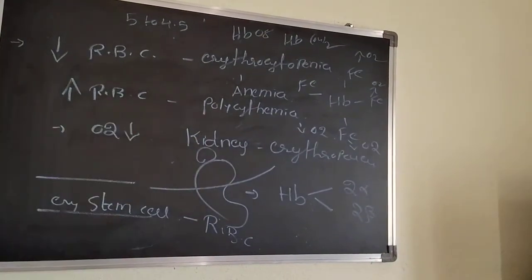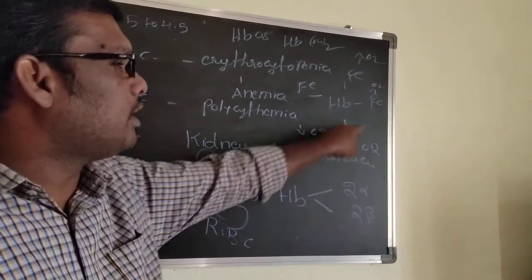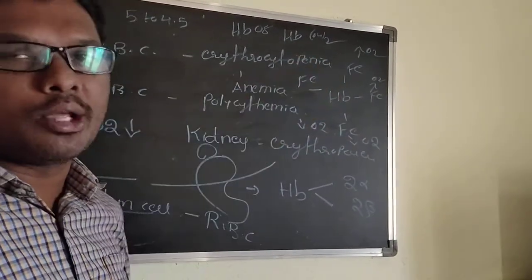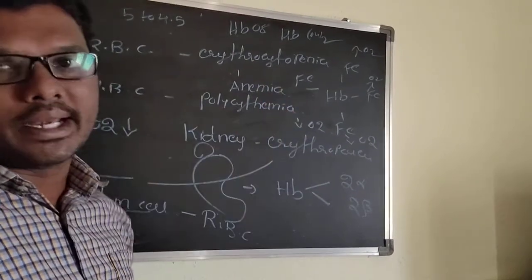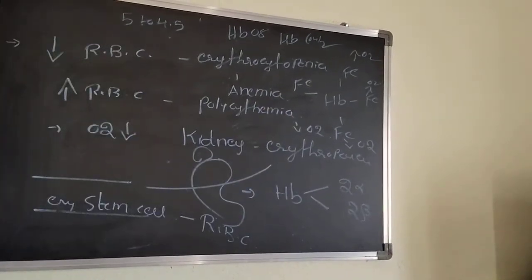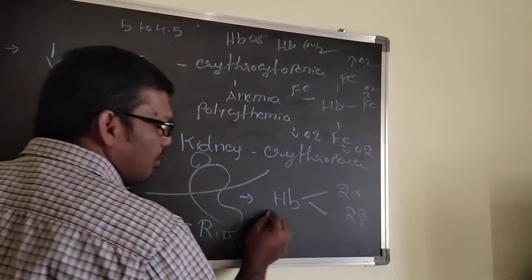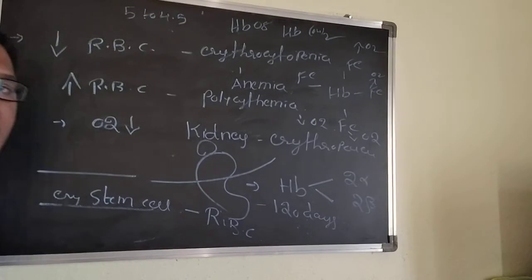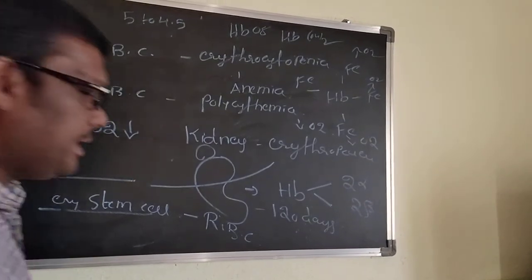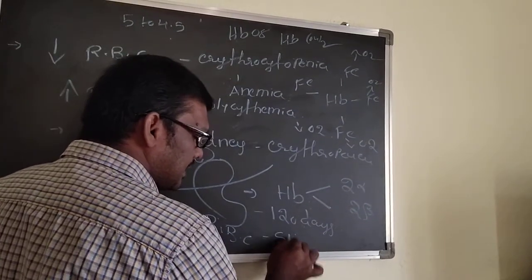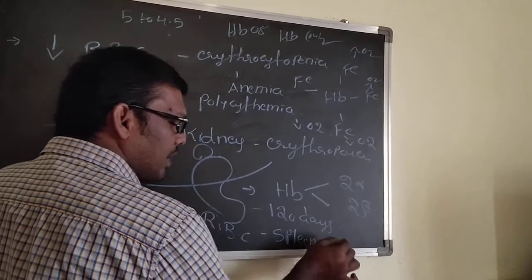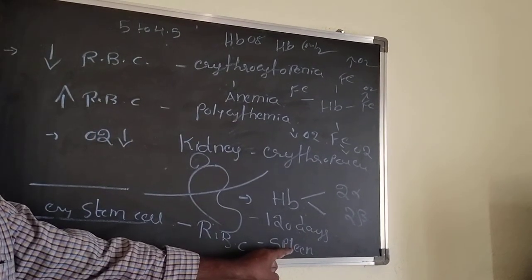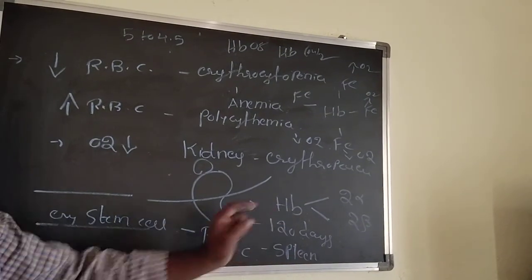Each hemoglobin has four heme ions, and each ion carries one oxygen molecule. The lifespan of RBC is 120 days. Dead or worn-out RBC are destroyed in the spleen region. That is why the spleen is called the graveyard of RBC.